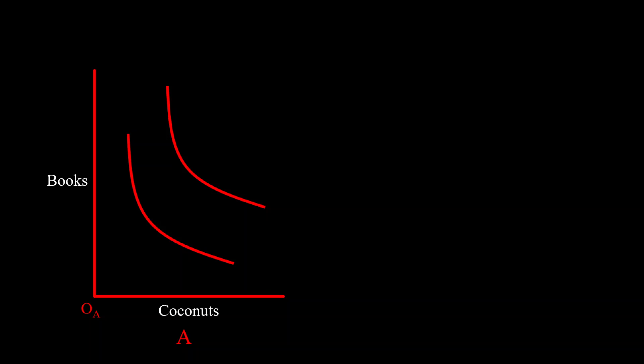Alright hopefully you have seen this graph before. We have an agent A and we have two goods, books and coconuts. The indifference curves are standard convex and the agent will prefer the higher indifference curve which will provide more utility because that agent prefers having more stuff. So the red arrow represents the direction of increasing utility.